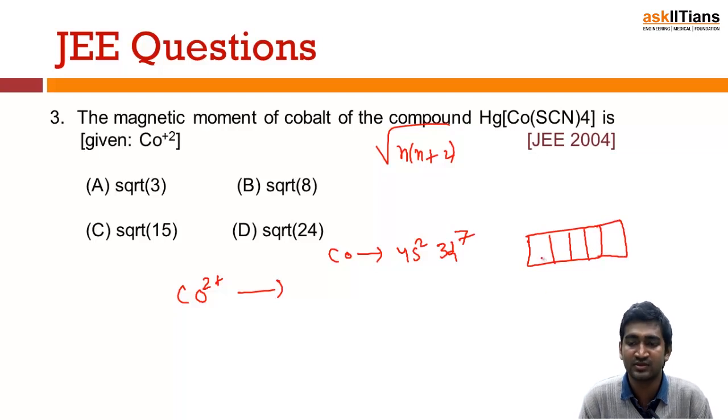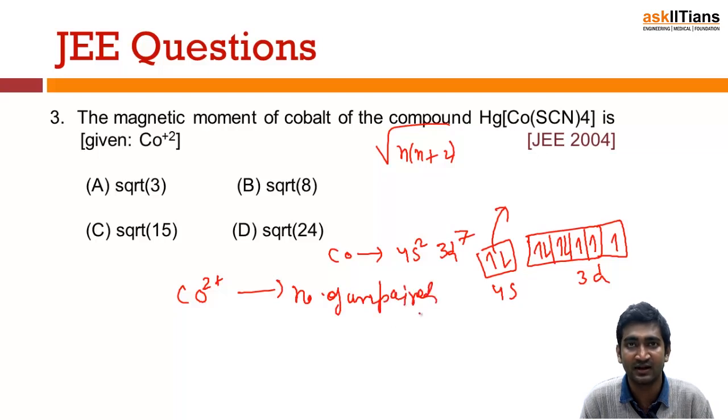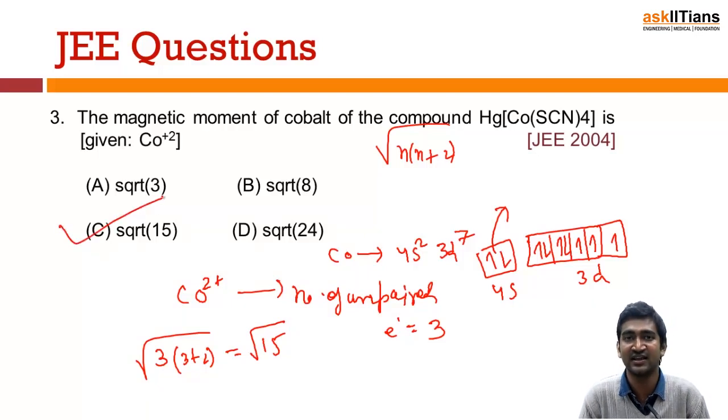So I have 1, 2, 3, 4, 5, 6, 7 electrons in 3d and 4s2. Now for Co2+, if you are removing the electron, that electron will get removed from the outer shell, which is 4s, so these two electrons will get removed and this is left. How many unpaired electrons? Number of unpaired electrons is 3. So just use this formula: root of 3 into 3+2, which means root of 15. So C is the correct answer.